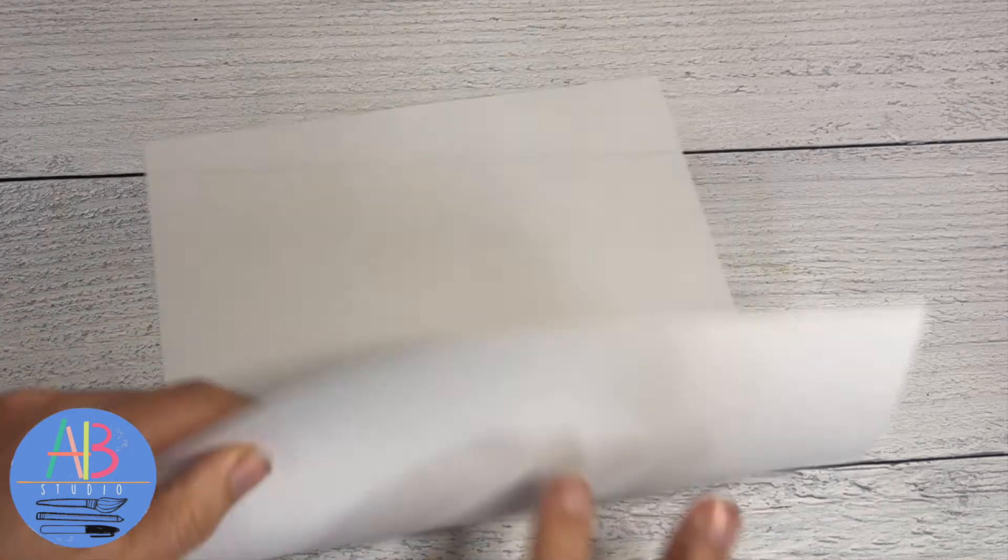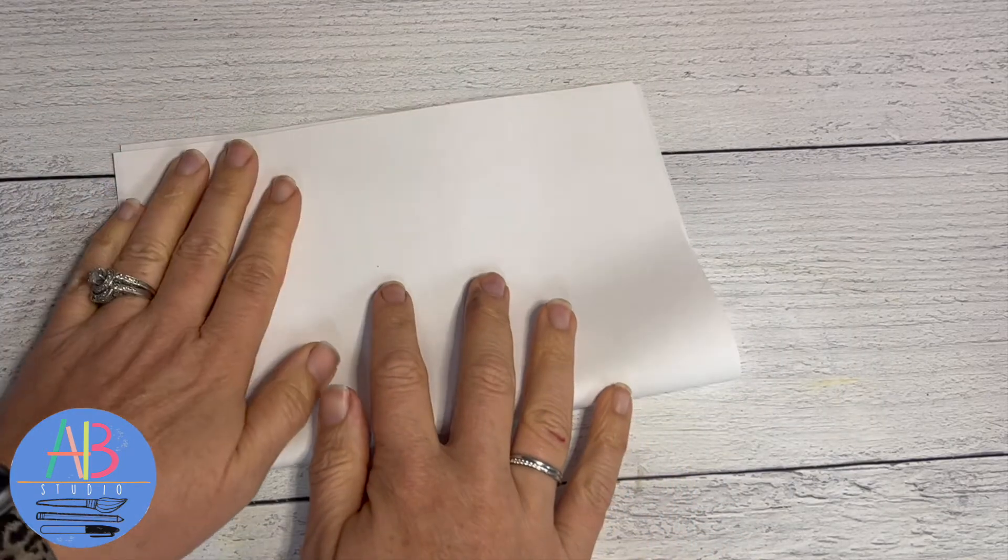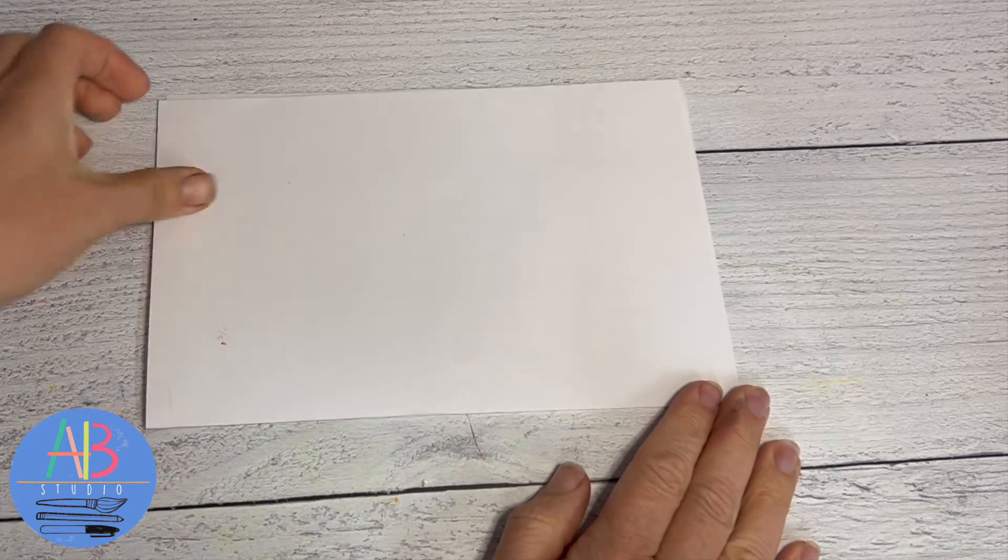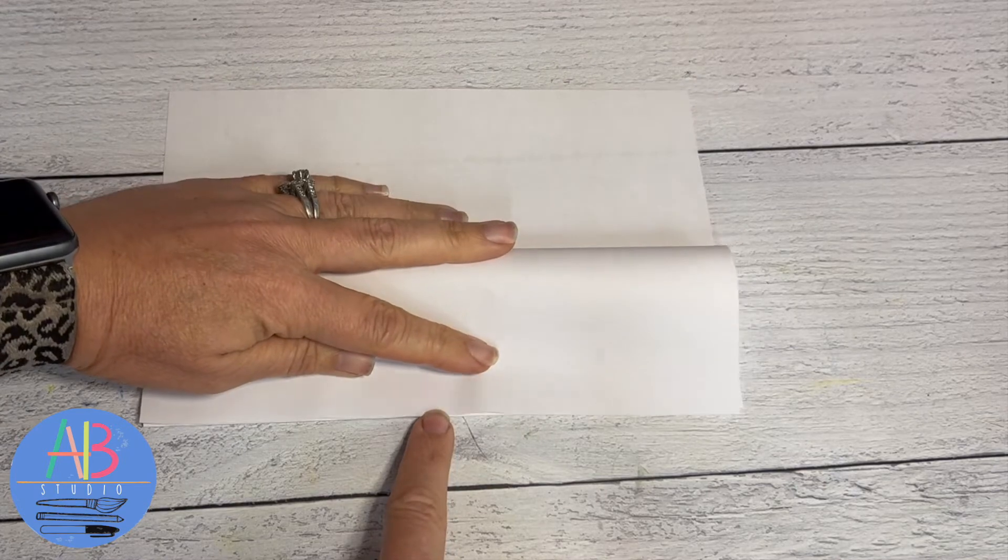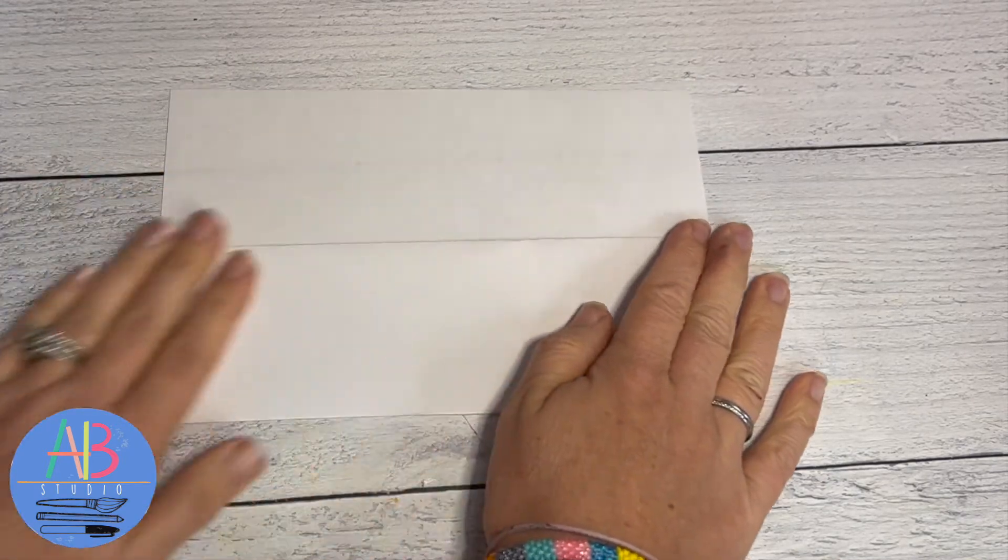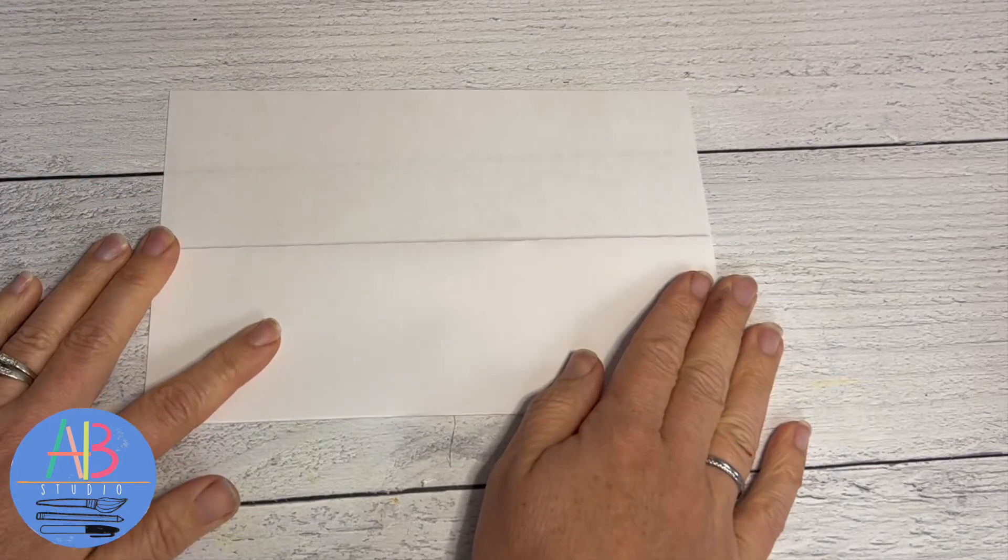Okay, so we're gonna make a candy corn foldable. You're gonna take your paper vertical, take the bottom and fold it to the top and crease. Take the top layer only, fold the top down to the crease and keep it folded as we draw.